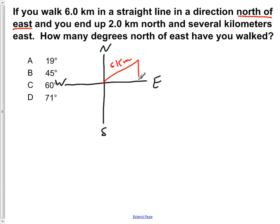We're told that we wind up being two kilometers to the north and several, which we're going to denote x kilometers in the east direction. Now, the objective is to find this angle with respect to the horizontal.